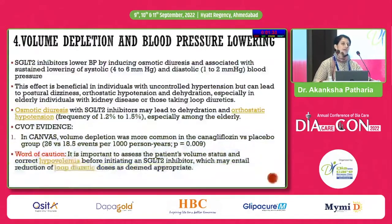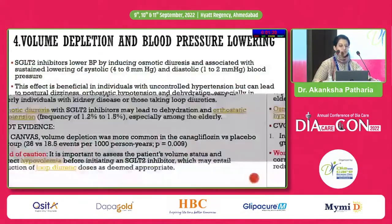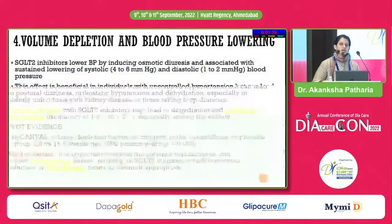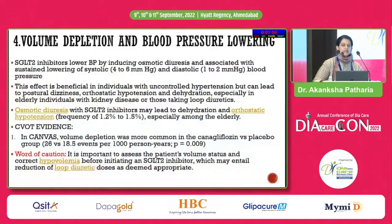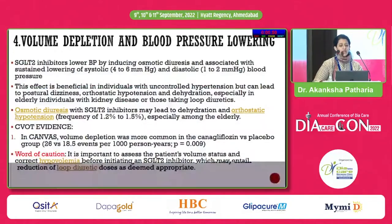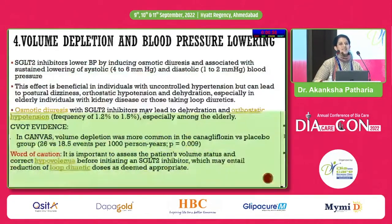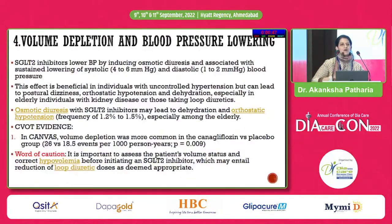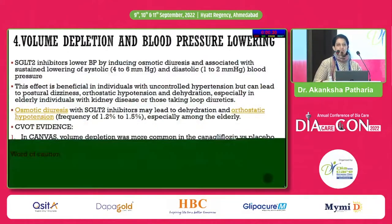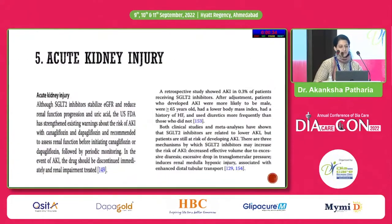Volume depletion due to osmotic diuresis from SGLT2 inhibitors is a concern. While helpful for blood pressure reduction — systolic BP drops by 4–6 mmHg — there are incidences of 1.2 to 1.5 percent of osmotic diuresis leading to orthostatic or postural hypotension, particularly in elderly patients with autonomic dysfunction. This was even proven in the CANVAS trial. Cardiologists adding SGLT2 inhibitors on top of loop diuretics have led patients to present with dizziness and falls — something very important to watch for.